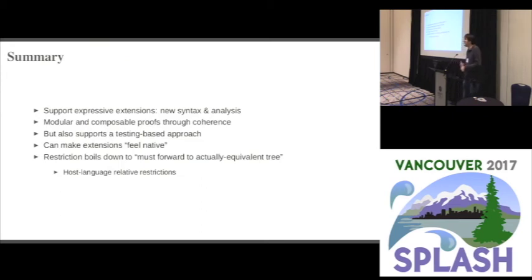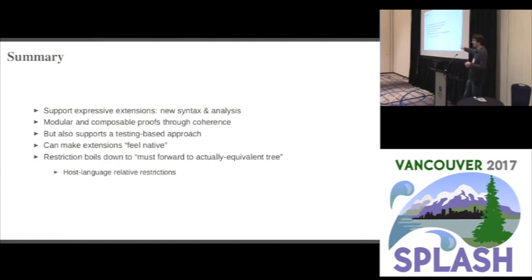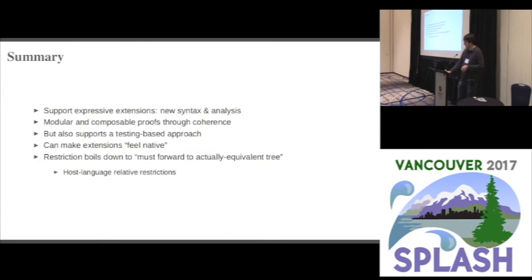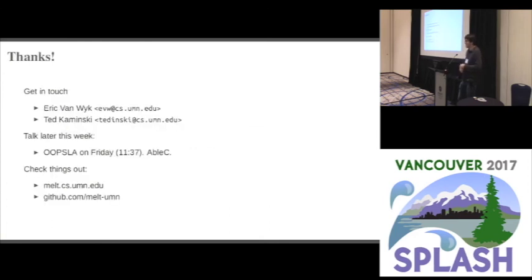In summary, we are able to introduce expressive extensions — we add new syntax, new analysis. We have a theoretical framework for doing modular and composable proofs, and a way based on that framework of doing testing to enforce non-interference. This is flexible enough to make language extensions feel like native language features. The restrictions we impose on extension developers is just that you must forward to an actually equivalent tree, which means the restrictions are host-language-relevant. Some host languages may have sufficient facilities to express things like 'this is a tainted value', and your extension makes use of that in a more domain-specific fashion. Thank you — if you'd like to see more examples of extensions, I'll be giving a talk on Friday.